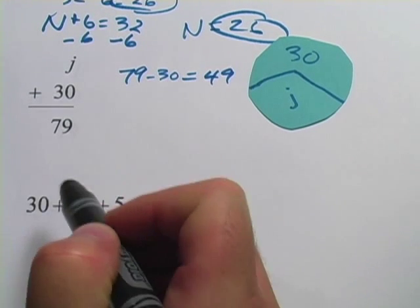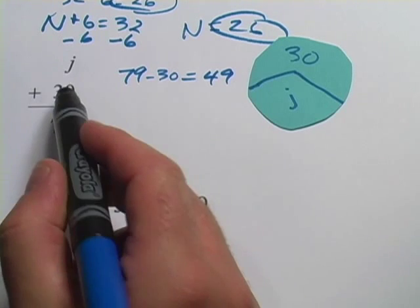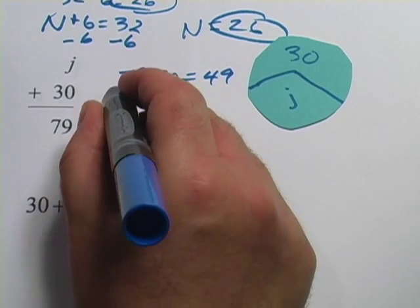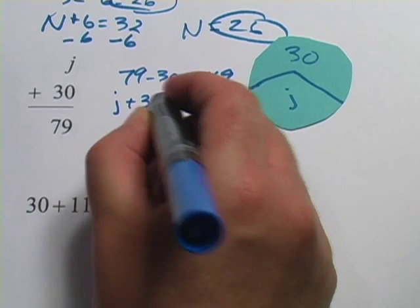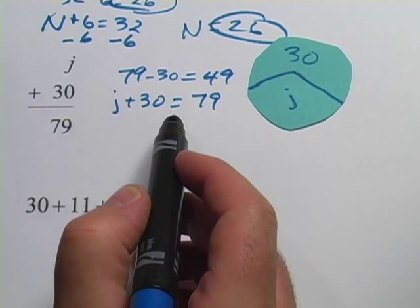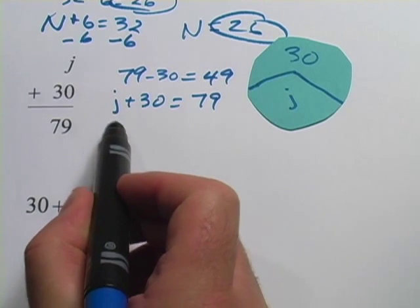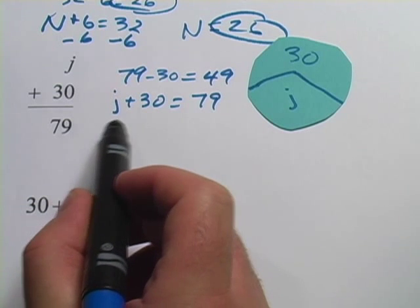Now if you want to do this in the algebra way, the first thing you want to do is rewrite it. j + 30 = 79. We want to do that because we really need to see that equal sign when we're doing an algebra problem. And remember, we want to get the letter, the variable, all by itself.